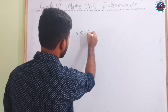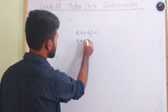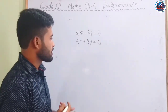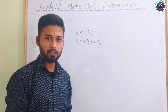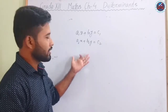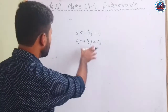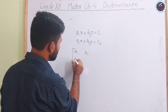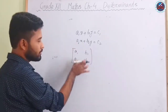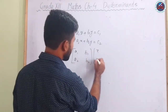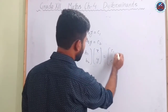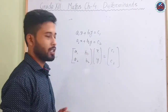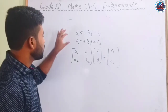For example, you have equations like a1x + b1y = c1 and a2x + b2y = c2. In Grade 10, you solved them using elimination, cross multiplication, or substitution methods. These can also be solved using determinants. In matrix form, we write the coefficients as [a1 b1 / a2 b2], multiplied by [x / y] equal to [c1 / c2]. If we solve this matrix we get the values of x and y.